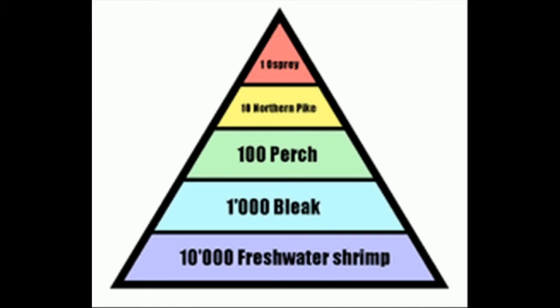Pyramid of Numbers: Questions and Answers. There are three types of pyramids: pyramid of biomass, energy, and numbers. What does the Pyramid of Numbers represent? The Pyramid of Numbers represents the number of individuals on a trophic level, compared to other individuals on other trophic levels.